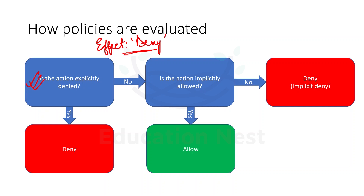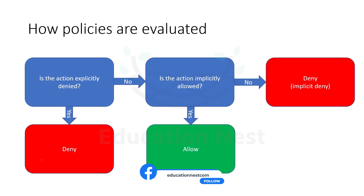If there is no explicit deny, then we check: is the action explicitly allowed? Have we specified 'Allow' anywhere in the effect? If we are explicitly allowing something, the final result would be allowed. By default, every action is implicitly denied — if you do not have an explicit allow, everything would be denied. Let's take one example.